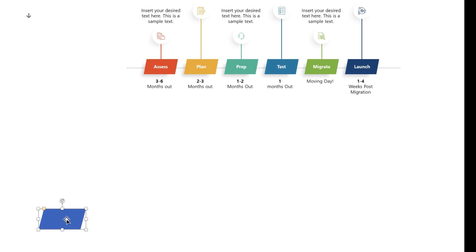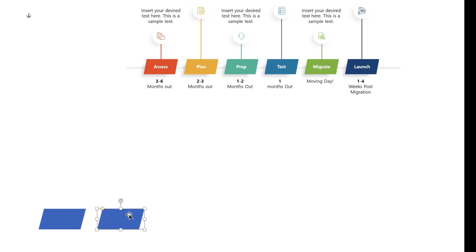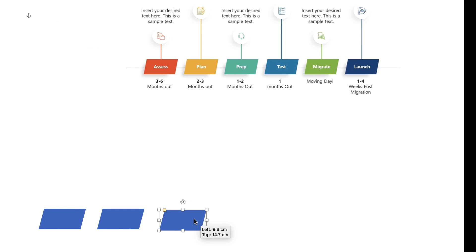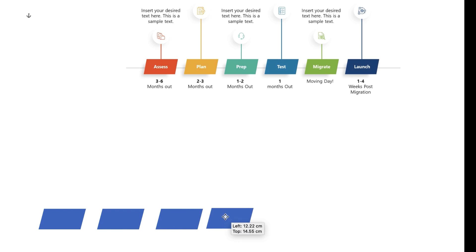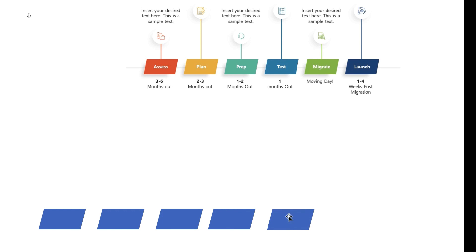All we're going to do is duplicate it — Command or Control D — and do that a number of times. You can also hold down your Alt key and then click and drag. You must have it selected, so select it, hold the Alt key, and click and drag.